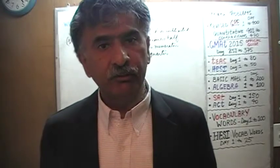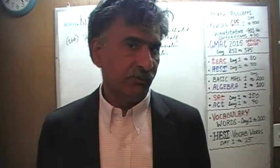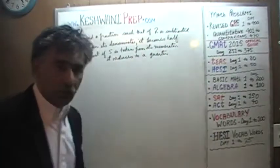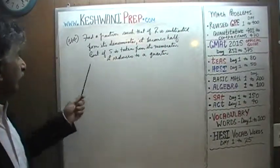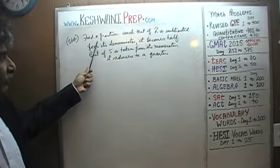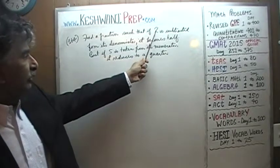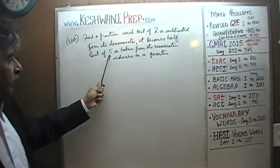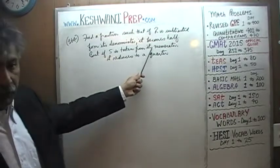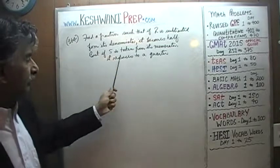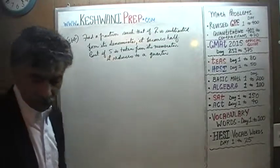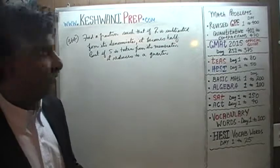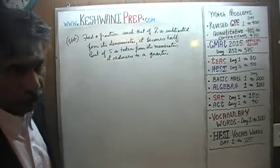Today we'll solve problem number 164 and 165. Problem number 164, as you can see, is already on the blackboard. Let's take a look at it. It says we have to find a fraction such that if 2 is subtracted from its denominator, it turns into a half. But if 5 is taken from its numerator, it reduces to a quarter. The question is: what fraction satisfies these two conditions? Let's find out, shall we?